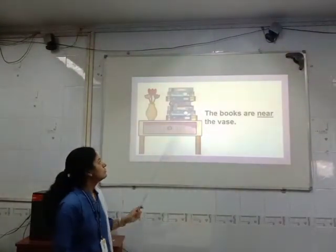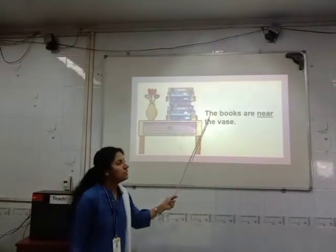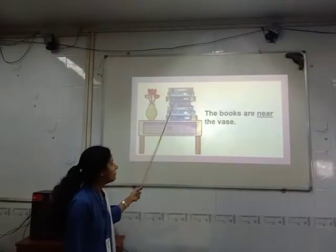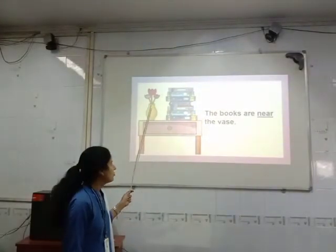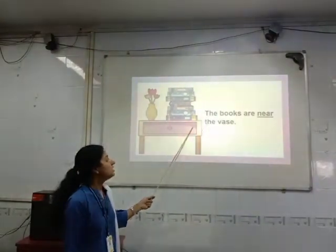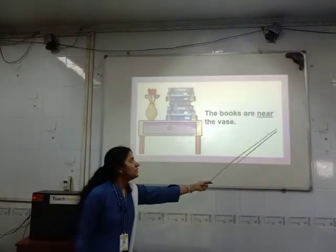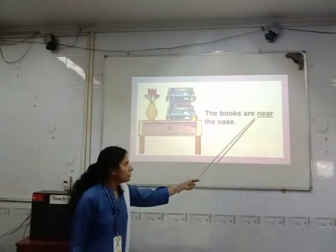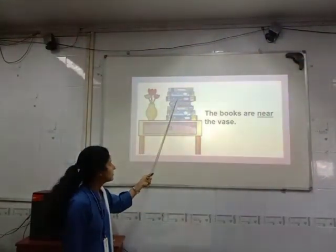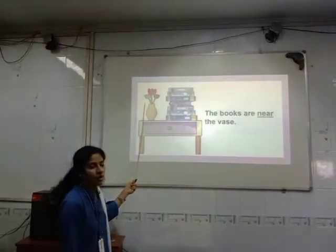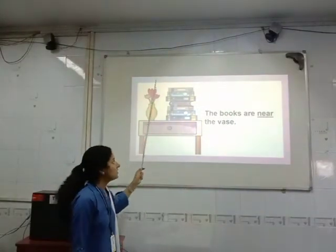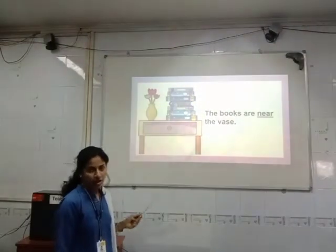Now see here. The books are near the vase. So where are the books? The books are near the vase. And also, the vase and books are on the table. But here, the books are near the vase. So the word 'near' tells us exactly the position of the books.